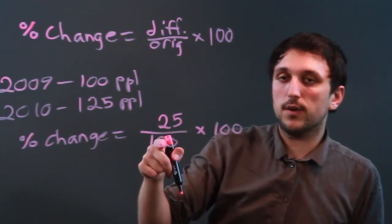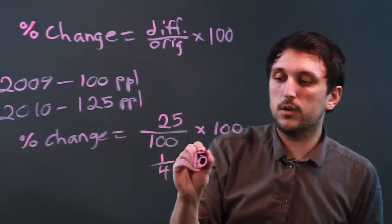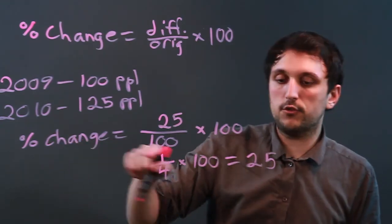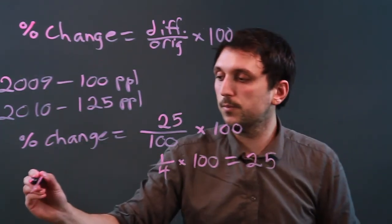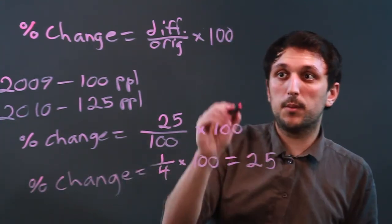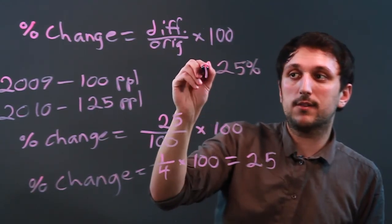Now 25 over 100 simplifies down to 1 fourth times 100 equals 25. So the percent change equals all this, but basically it's 25 percent change. It's an increase.